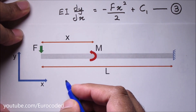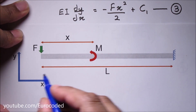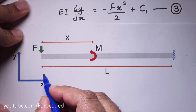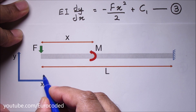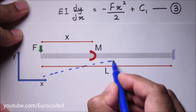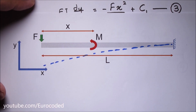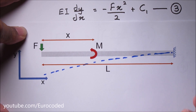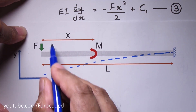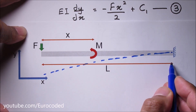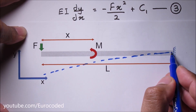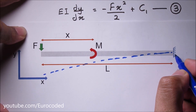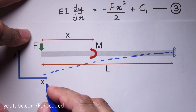If I draw the deflected shape of this beam it would be something similar to this. Now let's look at the boundary conditions. When x is equal to L there is no deflection because this is a fixed support, therefore we can write the corresponding boundary condition.